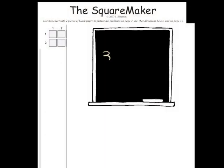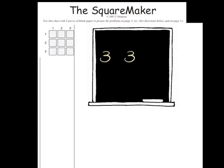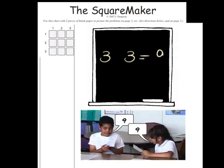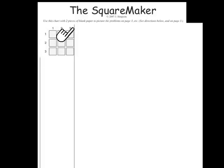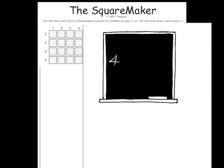Now ask the students to move their papers to show this many across and this many down, as you write the threes on the board. Ask them how many is that altogether, and which sign should we use now? Then ask them to trace their hand around the outside of the boxes. What shape is that? We just constructed three squared.